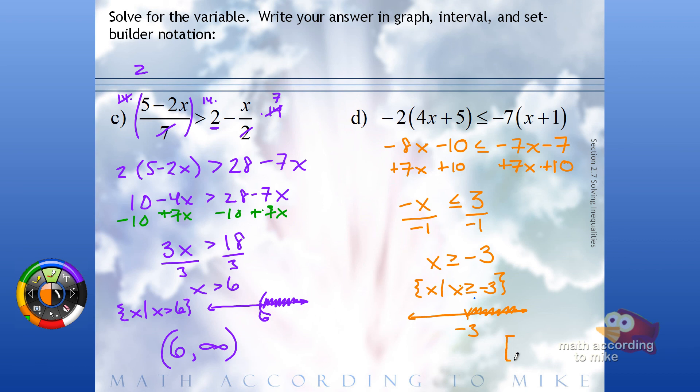From left to right, the smallest number in there is negative 3. Oh, I forgot to put a bracket there. Save the day. The biggest number is infinity.